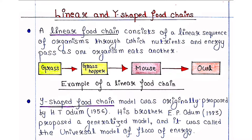A linear food chain consists of a linear sequence of organisms through which nutrients and energy pass as one organism eats another.